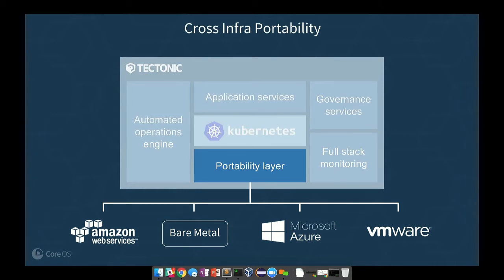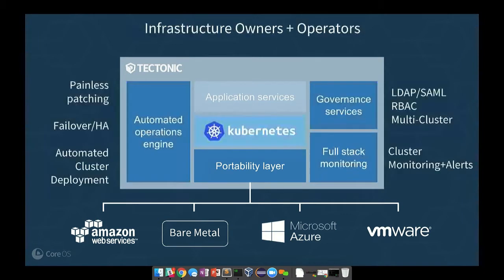Some of the personas we're looking to address are the infrastructure owners and operators. These folks are interested in painless patching — they don't want a fire drill whenever there's a CVE in the Linux kernel or in the Kubernetes codebase. They want to drive updates easily, which we can do with Tectonic running on Container Linux. They're also looking for governance: locking down the system with RBAC, integrating with existing LDAP and SAML, and being alerted if anything happens to applications or the system itself.